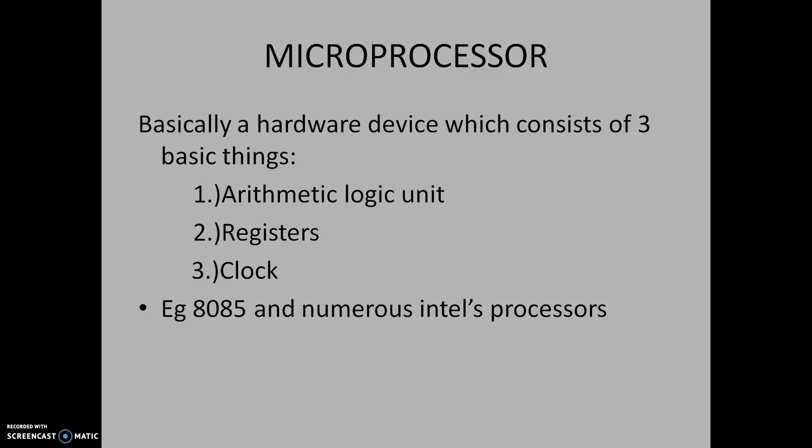By the dictionary meaning, a processor is something which processes information. In microprocessor or electronic language, this information is in the form of digital bits — 0 or 1. So a processor is something which processes information in the form of 0 and 1, and it carries on arithmetic operations on the information that is received.